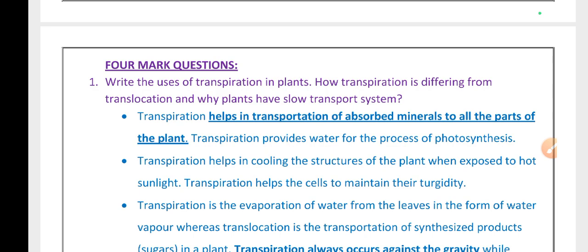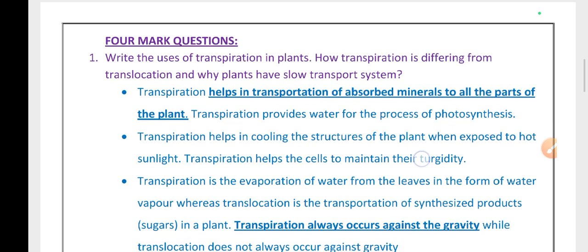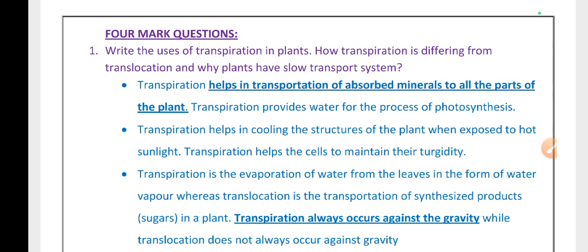We already discussed one more question, two more questions and diagrams. Now we are going to discuss Life Process - four more questions. Write the uses of transpiration in plants. How transpiration is differing from translocation and why plants have a slow transport system.